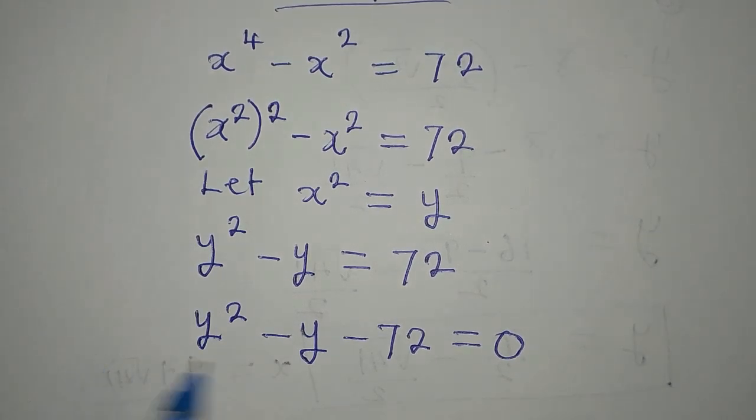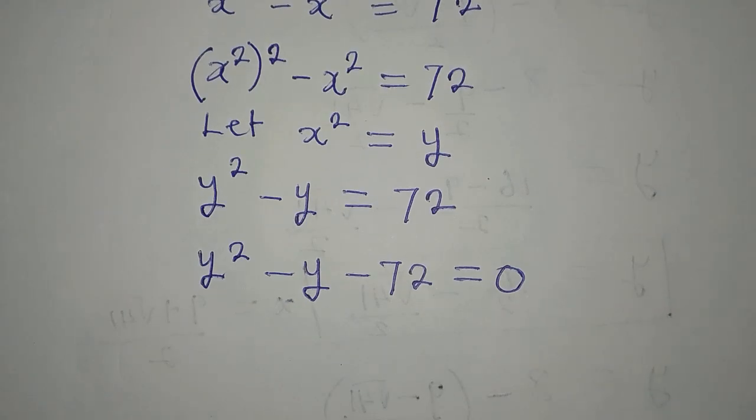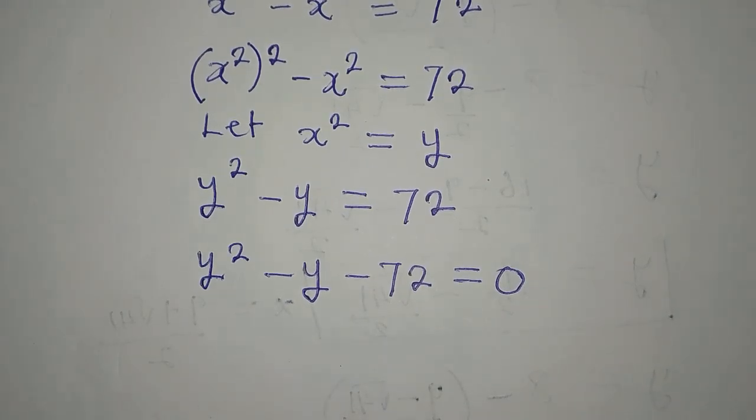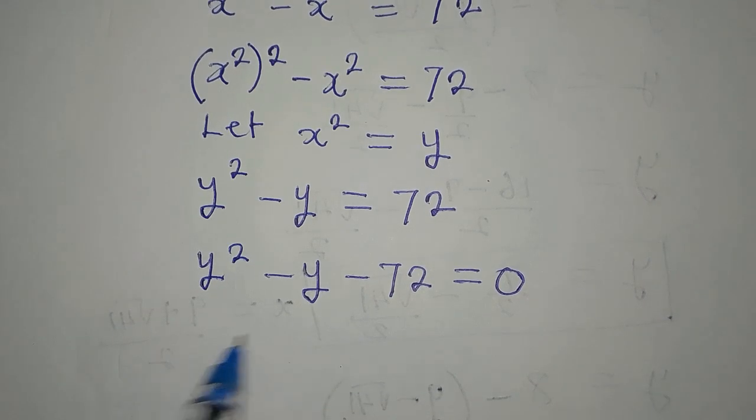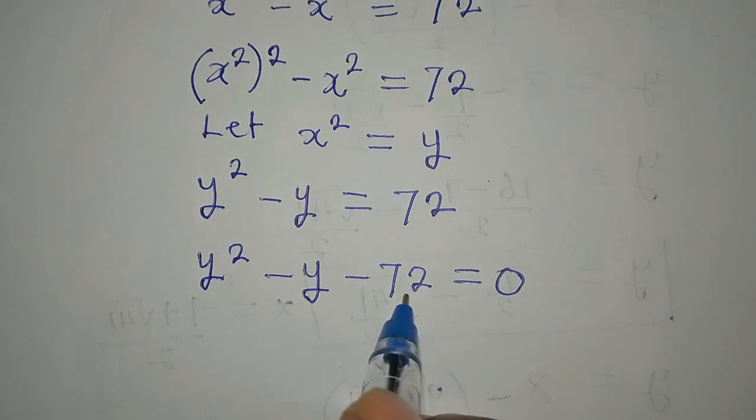Now, what method would you use to solve this problem? We can apply factorization method. So in that case, we look for two numbers that we will multiply to get minus 72 and we will add them to get minus 1.